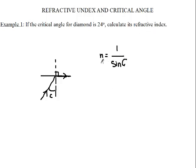Now here we've been asked to calculate the refractive index, which is N. So N is equal to 1 over sine 24.